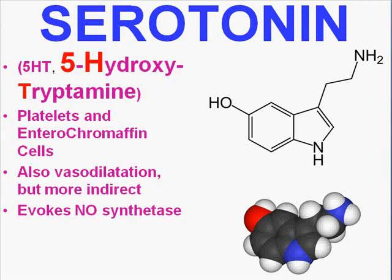Serotonin is sometimes said to be in mast cells, but its main source is from platelets and enterochromaffin cells. It is also called five-hydroxytryptamine. It is a vasodilator just like histamine, but a little more indirect. It also has an extreme role in brain chemistry as one of the main neurotransmitters, involved in the full spectrum of emotional responses. Serotonin evokes nitric oxide synthase, which is the main reason it is a vasodilator, because nitric oxide is a powerful vasodilator.